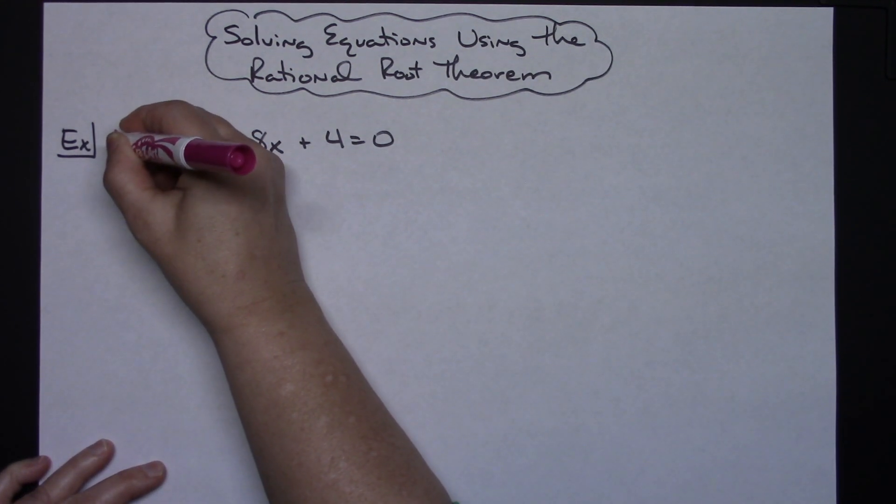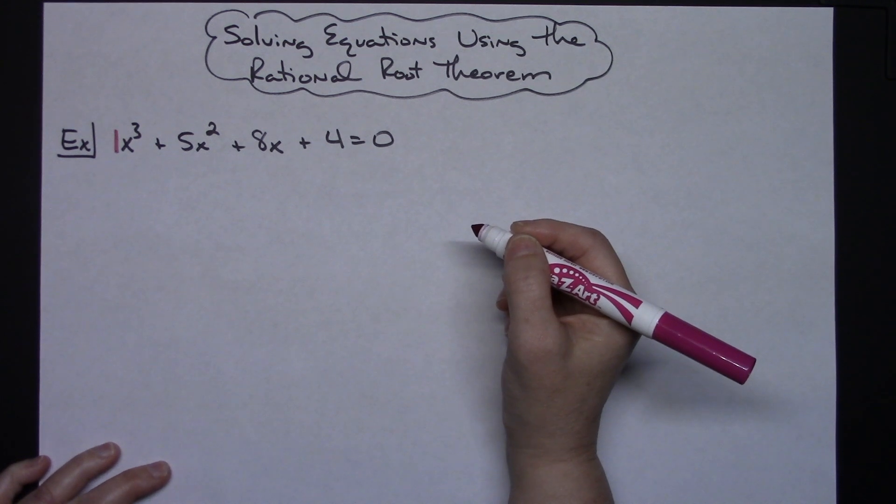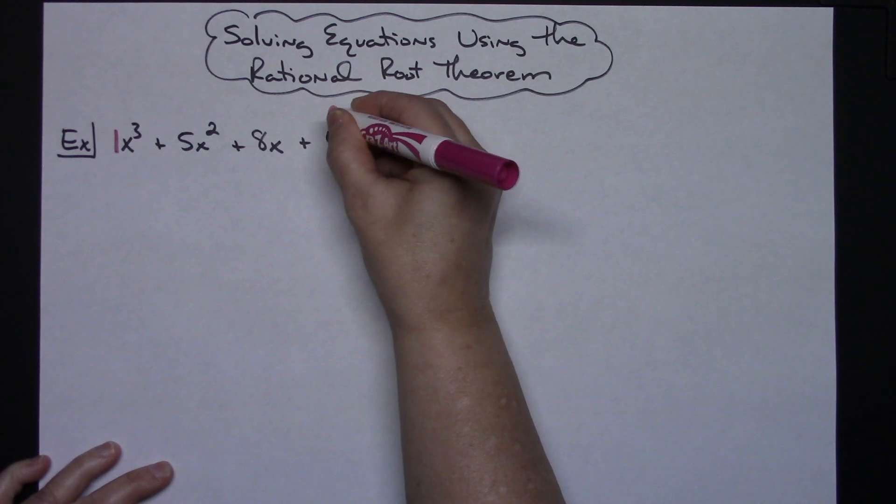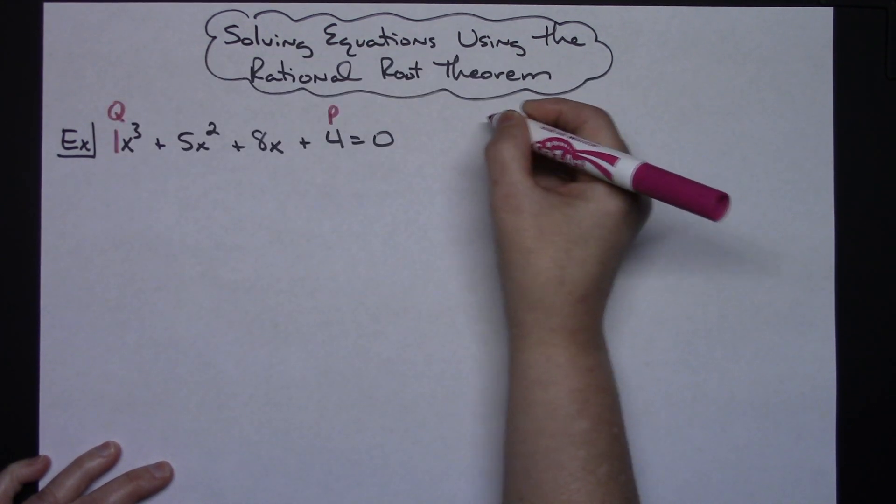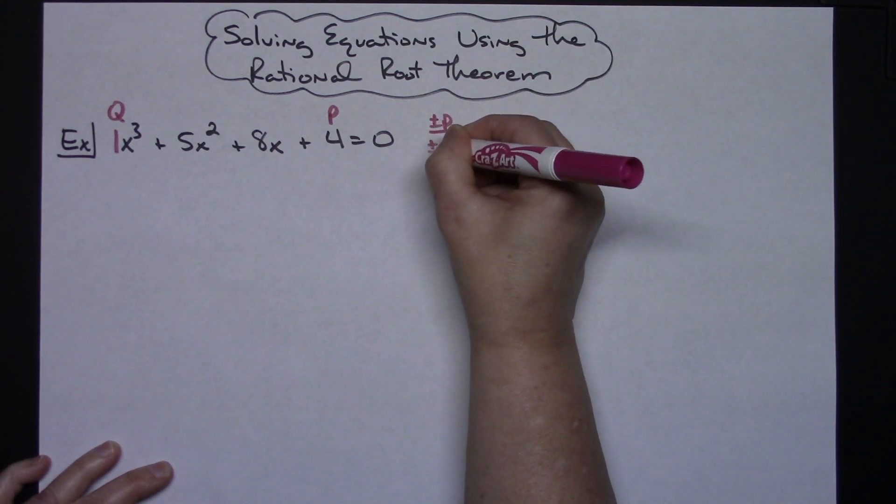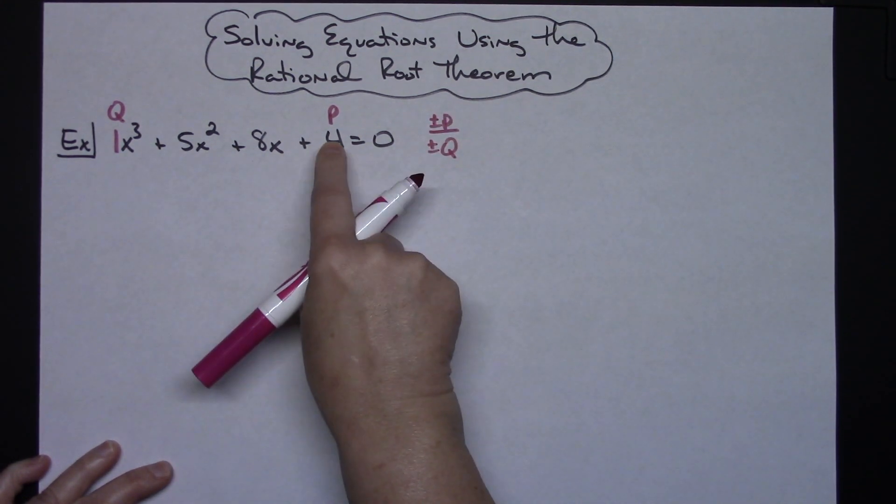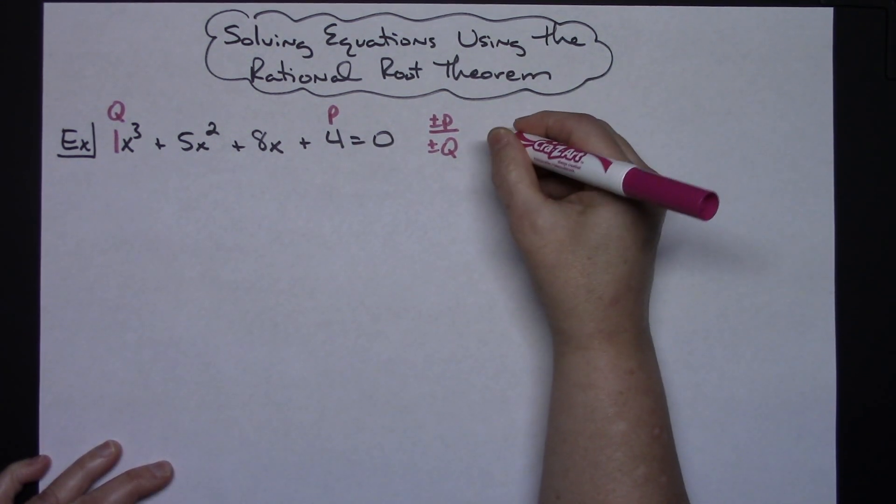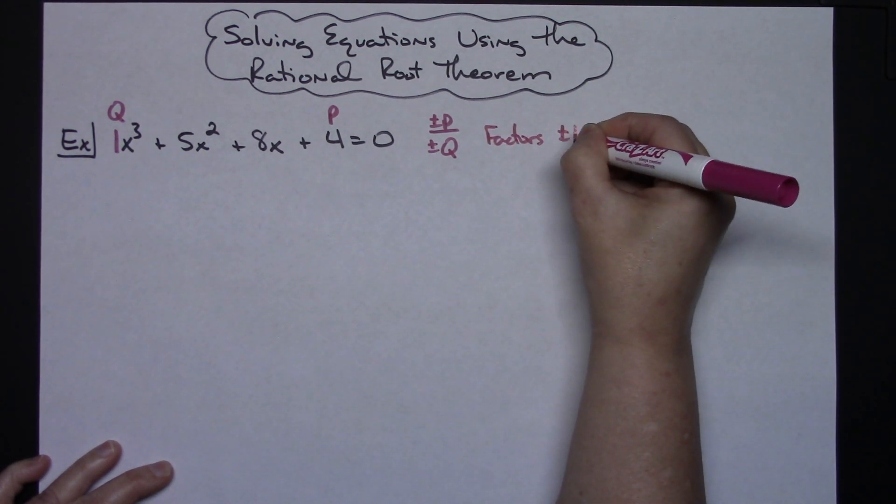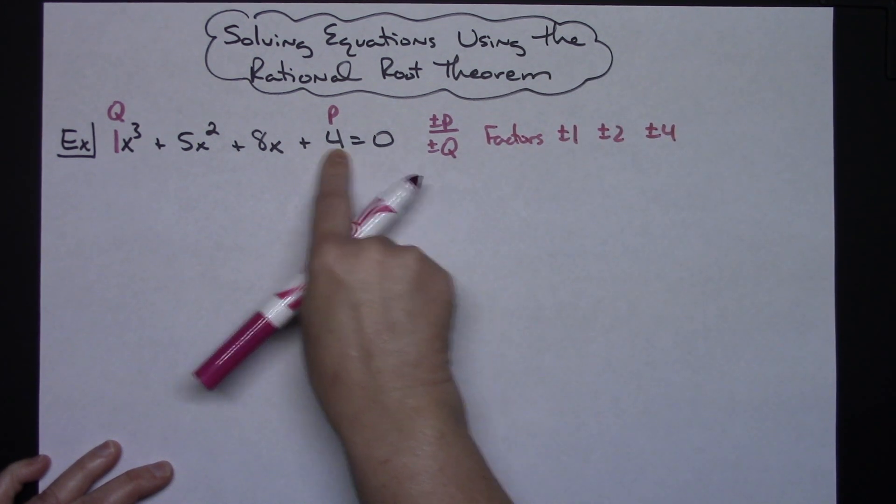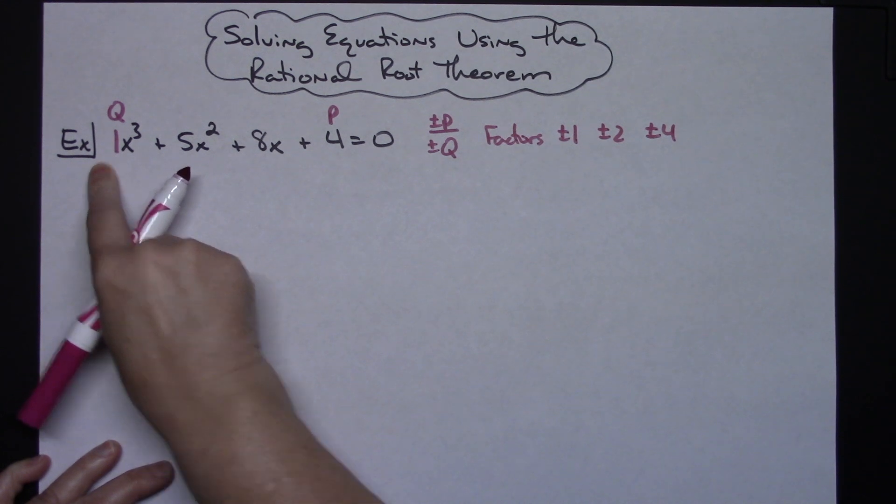Now with this problem having a one leading coefficient there it is going to make this a little bit easier because this would be your p's and this would be your q's and as you recall with the rational root theorem we've got to do plus or minus p over that plus or minus q. So we're going to be putting all of our factors of p over one so there's not going to be a lot there to test. So basically I've got to look at my factors of plus or minus one, plus or minus two, and plus or minus four.